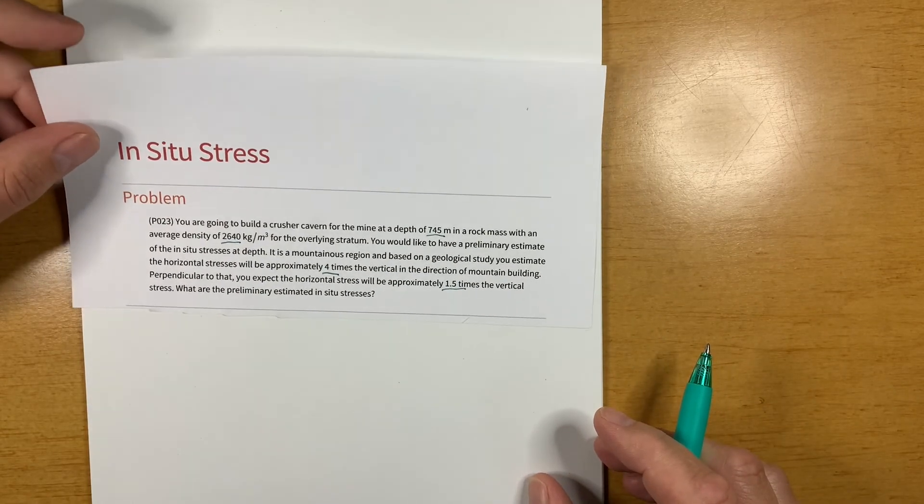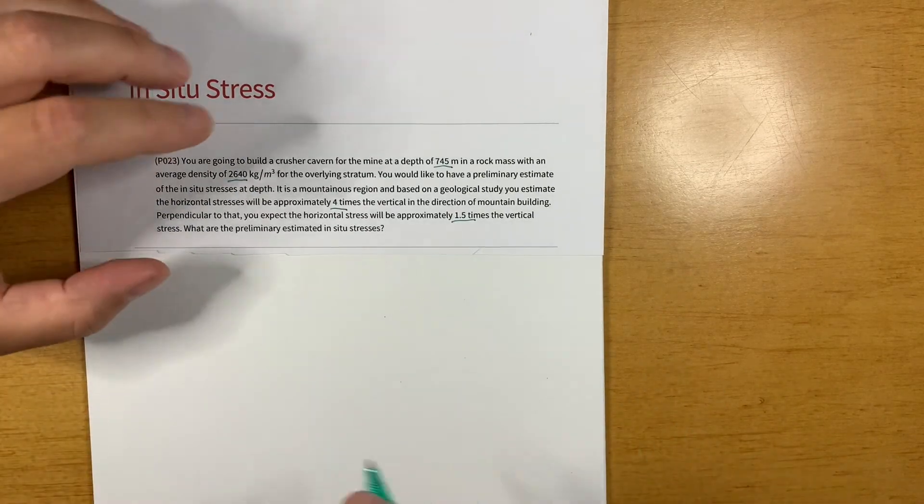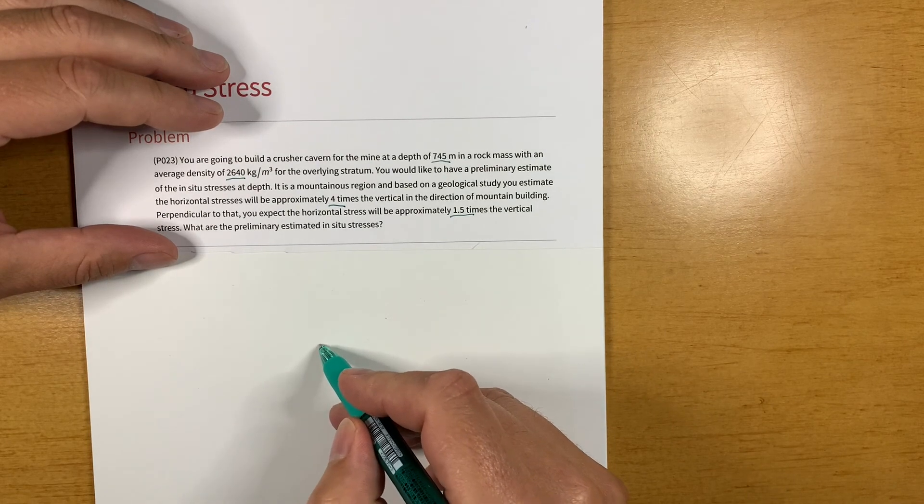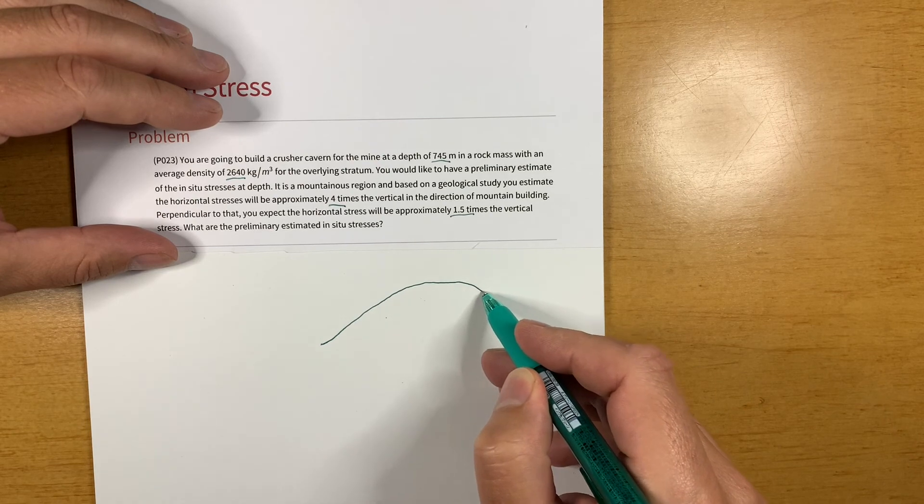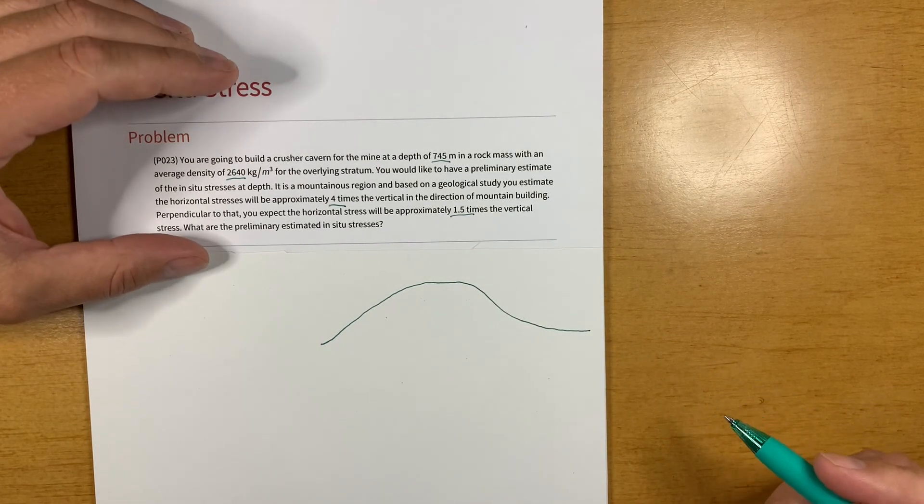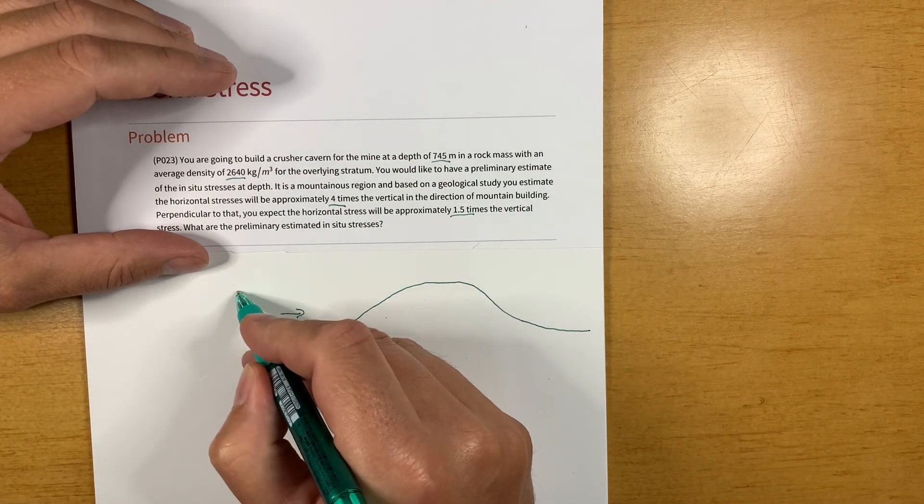Well the first thing I like to do is to draw a little sketch of our problem. So we're talking about a mountainous region right? This won't be to scale or anything, but just sort of give us some kind of idea, and we're saying that this is the mountain building direction.